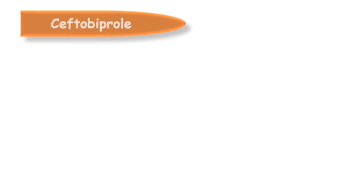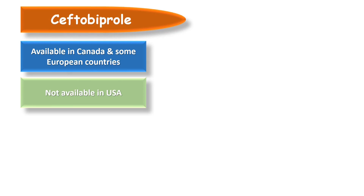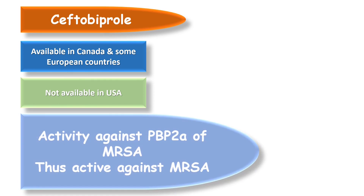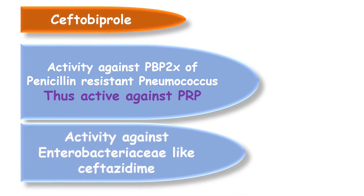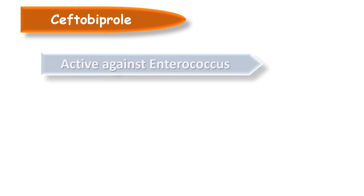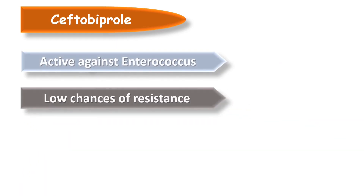Ceftobiprol is another fifth generation cephalosporin available in Canada and some European countries, but not in the United States. It is capable of binding to penicillin-binding protein 2A and is thus active against MRSA. It can also bind PBP2A present in penicillin-resistant Streptococcus pneumoniae. Ceftobiprol has in vitro activity similar to that of Ceftazidime or Cefepime against Enterobacteriaceae, and also has activity against Enterococcus. Additionally, Ceftobiprol appears to have a low potential for selection of resistance. The advantage of Ceftobiprol over Ceftaroline is that it is active against Enterococcus and has less chance of resistance.